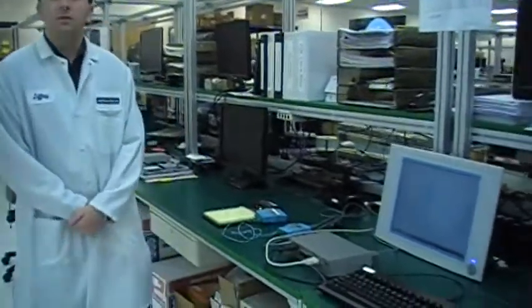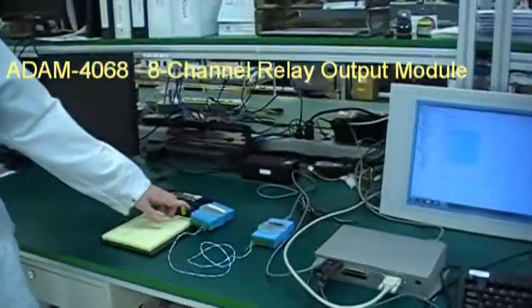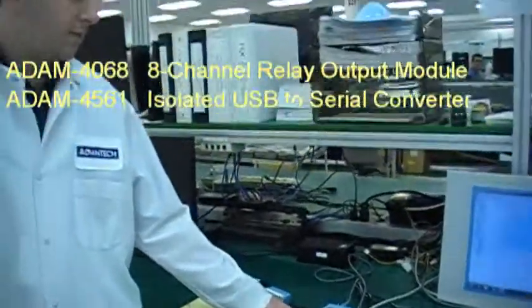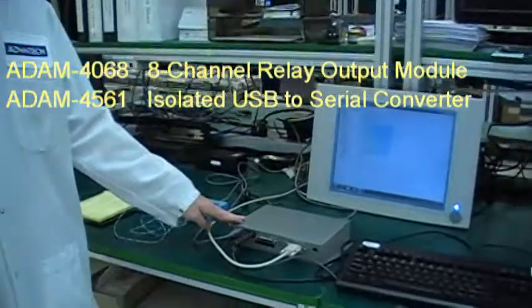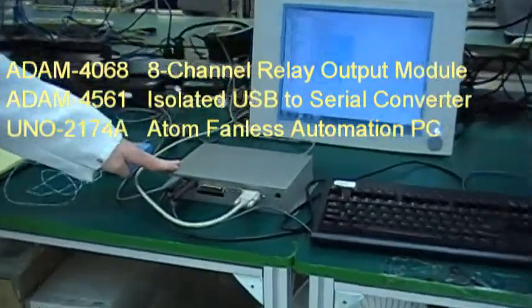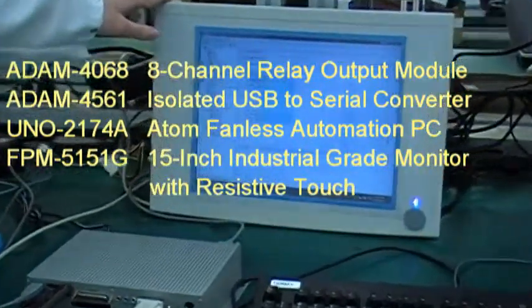The Advantech products we'll be using today are an Atom 4068 relay module, an Atom 4561 USB to serial converter, the Uno 2174 Atom-powered automation PC, and the FPM 5150 industrial grade touch monitor.